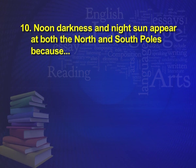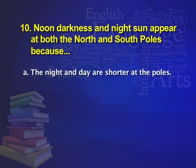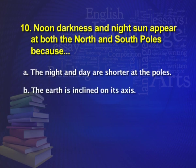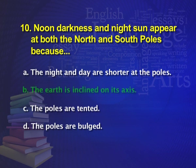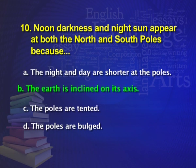The next question is: noon darkness and night sun appear at both the north and the south poles because — A: the night and day are shortened at the poles; B: the earth is inclined on its axis; C: the poles are tented; D: the poles are bulged. The right answer is option B — because the earth is inclined on its axis.